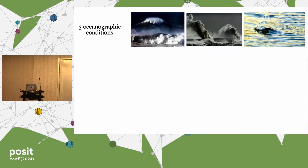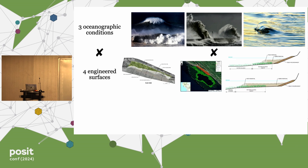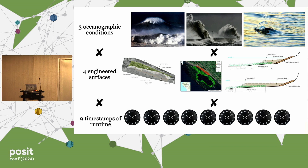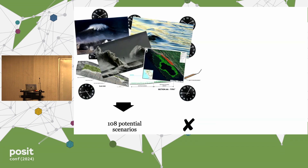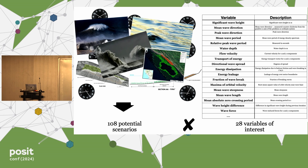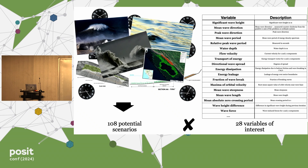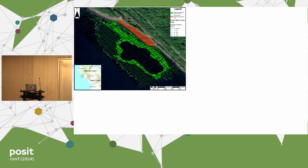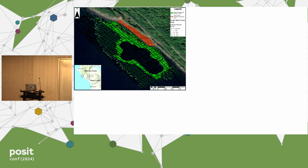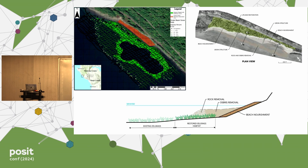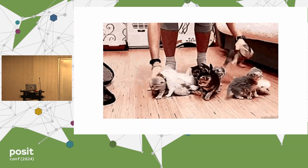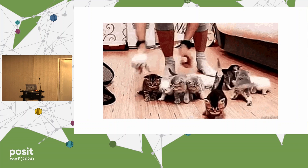For the Clayton Beach models, we had three separate oceanographic conditions times four engineering surfaces times nine timestamps of runtime, giving us about 108 potential scenarios. For each scenario, we have 28 hydrodynamic variables of interest — that is 3,024 individual items we need to pull out manually. At two clicks per second, that's about half an hour, which is not that bad. But we're always asking new questions: What if we fill in that dredged trench offshore? What if we add more groins to shift sediment transport? What if we restore the eelgrass? Each time we do this, we have to rerun the models and extract everything again, and pretty soon you have a rapidly expanding database of similarly named things that you have to query and organize. And there's a better way.